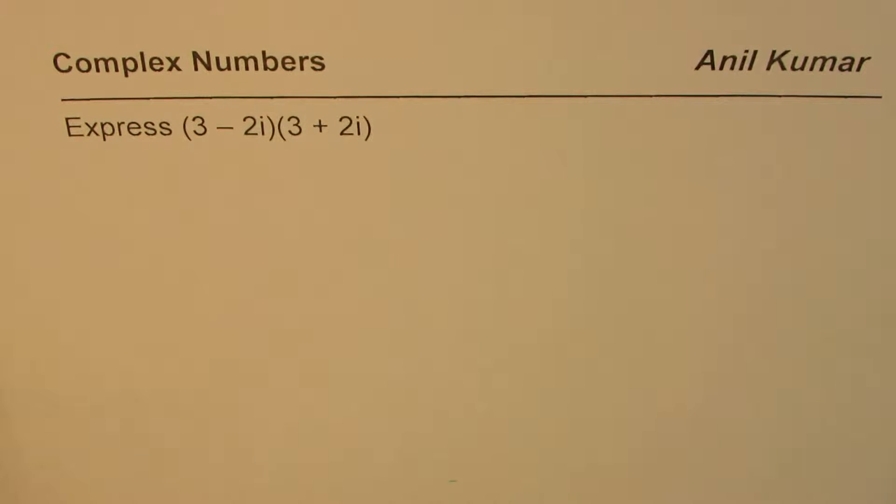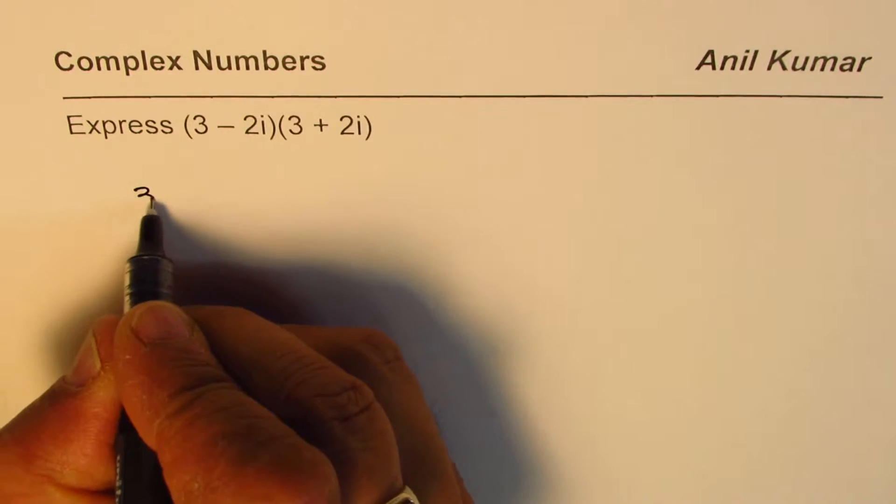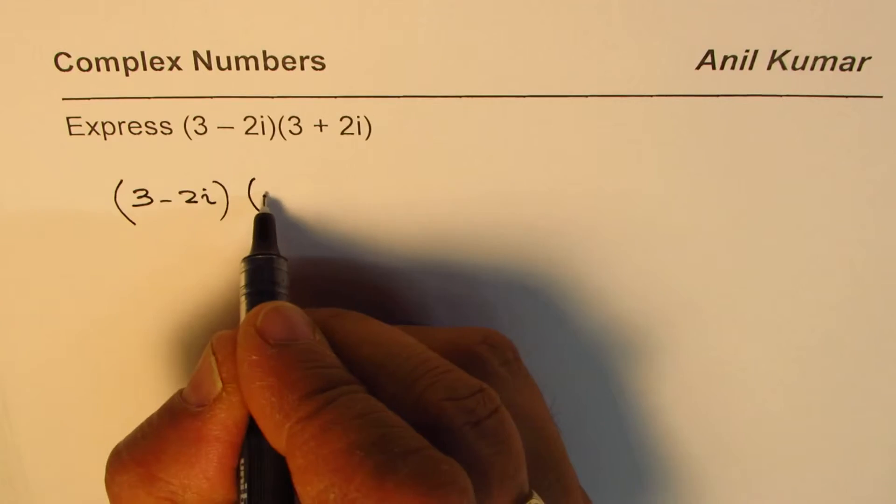I'm Anil Kumar and in this video we'll understand what is the result of product of sum and difference when we are talking about complex numbers. So we have 3 minus 2i, that is the difference, we'll multiply by the sum of these two which is 3 plus 2i. Let's see what we get.